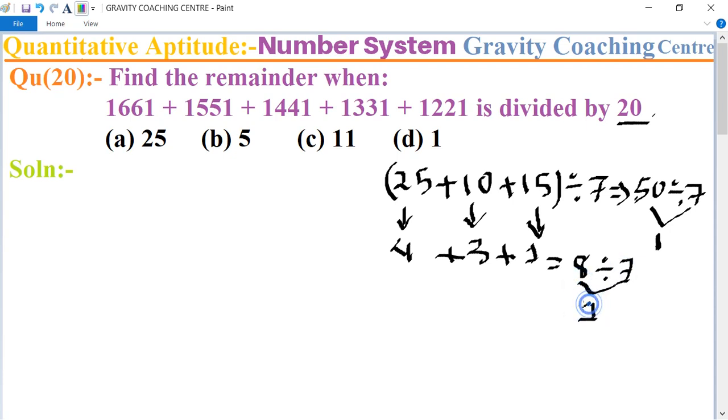So we use this process in this question. First number is divided by 20, so it gives 1 as a remainder. And next one, 11 as a remainder. And again, 1 as a remainder, and 11 as a remainder.